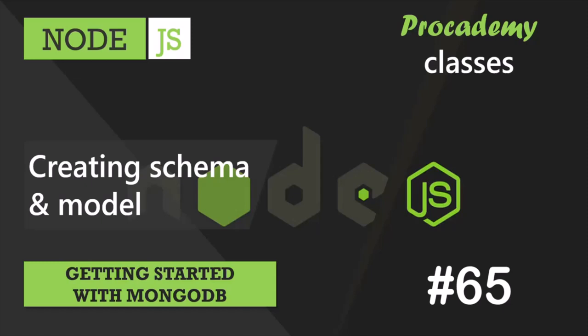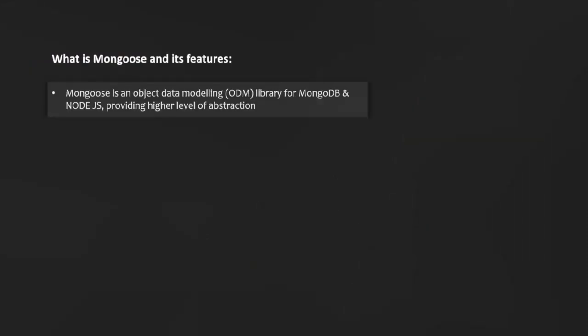In the last lecture, we connected our database to our Node.js application using Mongoose. Mongoose is an object data modeling library for MongoDB and Node.js, providing a higher level of abstraction. An object data modeling library is just a way for us to write JavaScript code that will then interact with the database. We can also use a regular MongoDB driver to access our database, but instead we are using Mongoose because it gives us a lot more functionality, allowing for faster and simpler development.